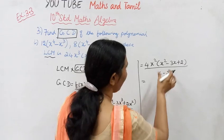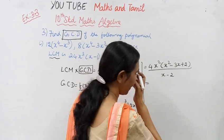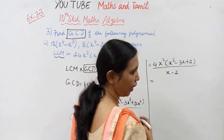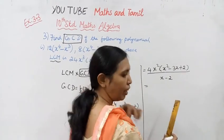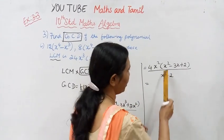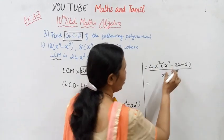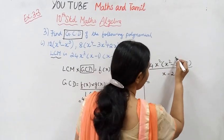x² minus 3x plus 2 — this is a quadratic equation. We can factor it directly using sum and product method.